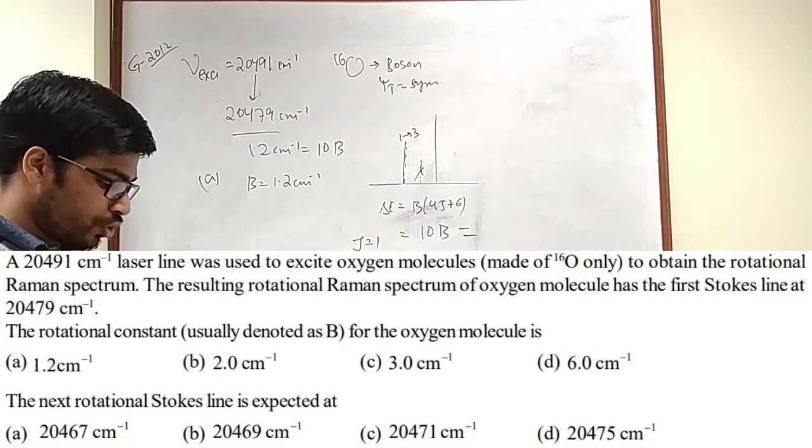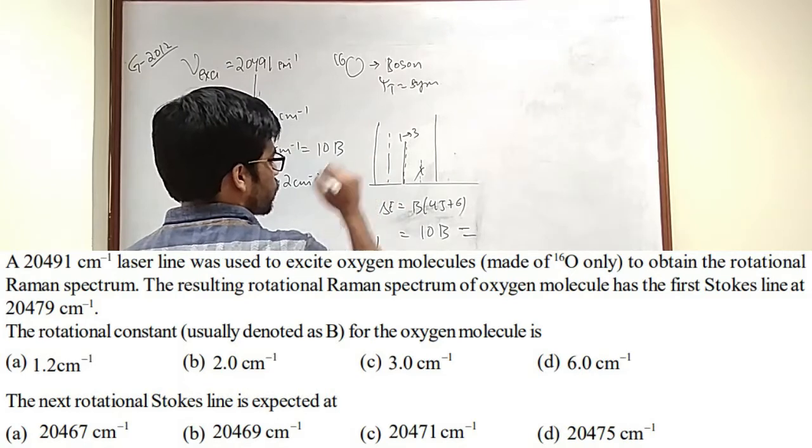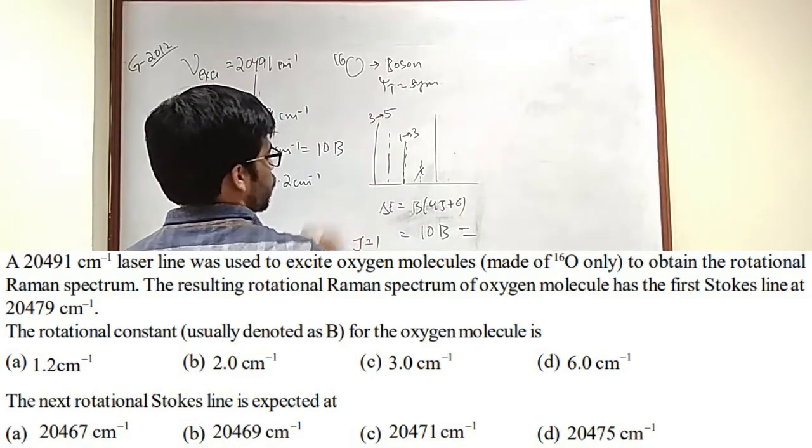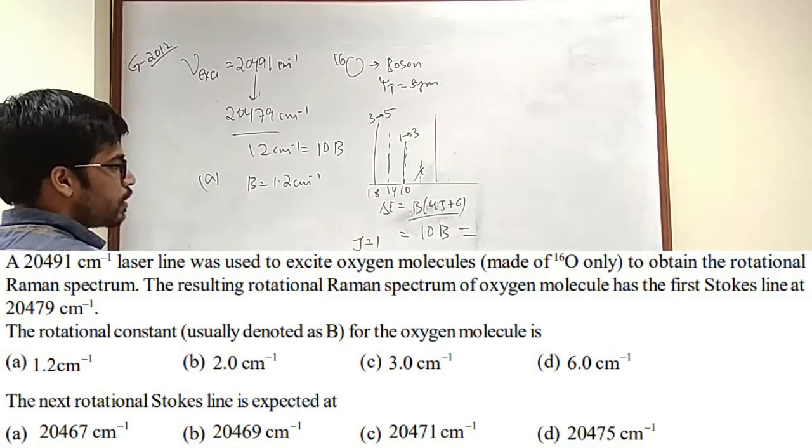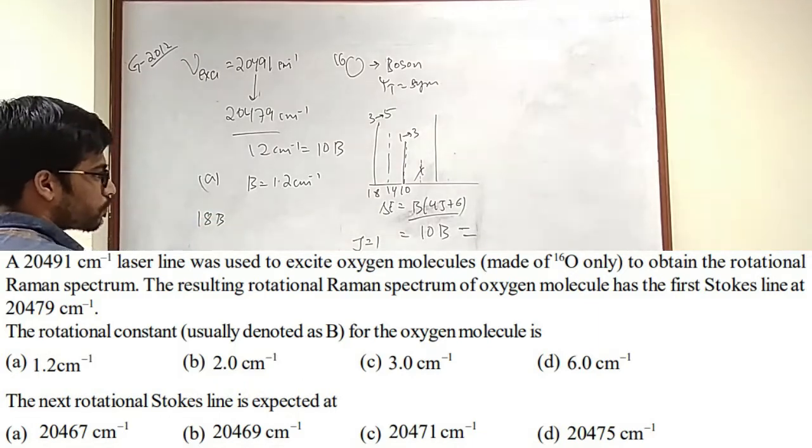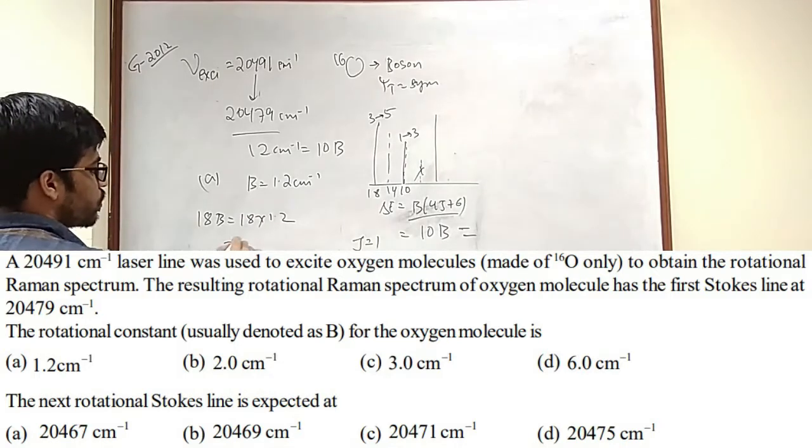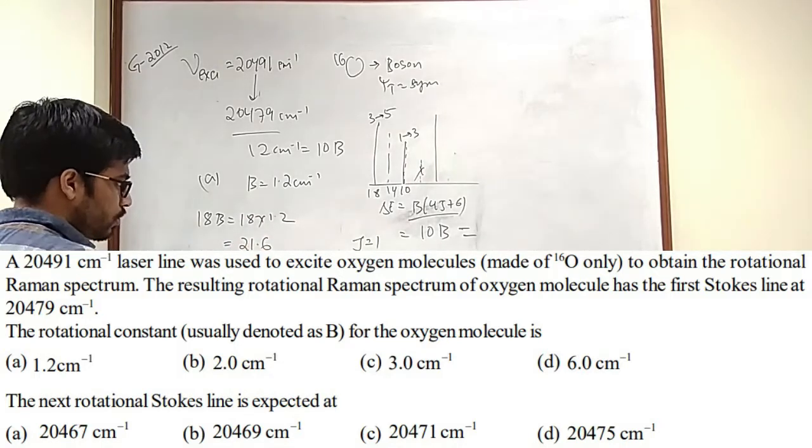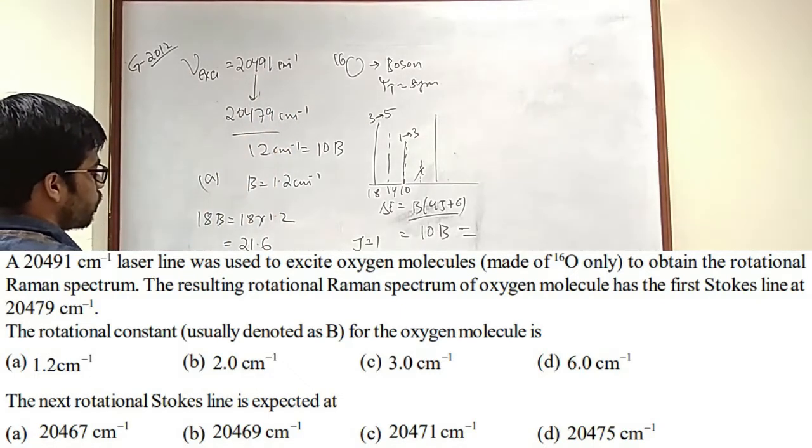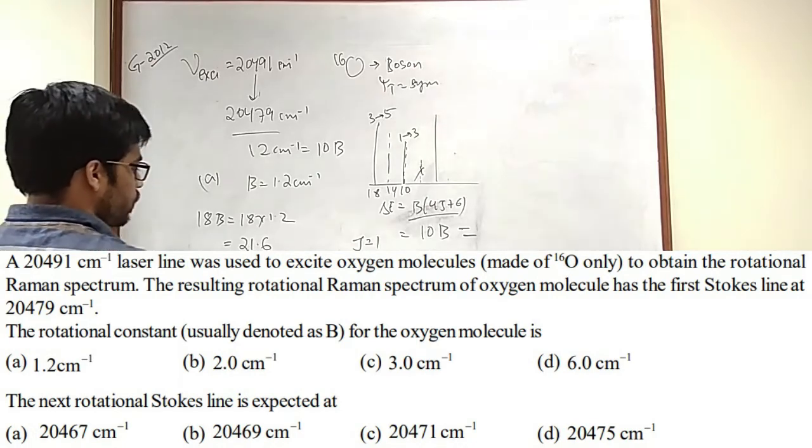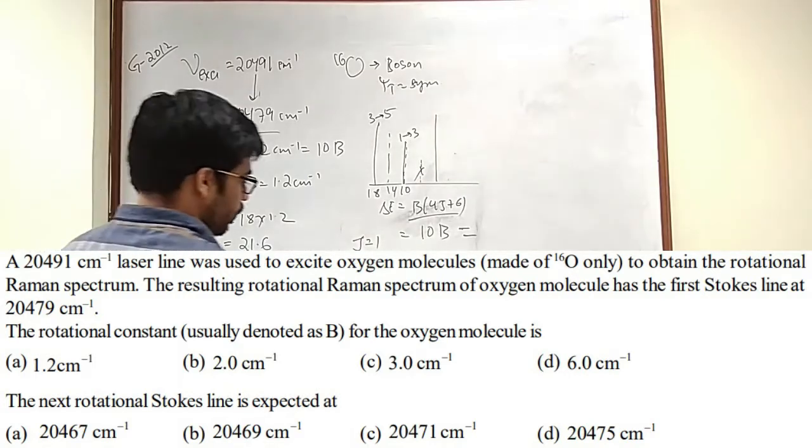Another question is that the next rotational Stokes line is expected at. So you know the next line is going to be missing, and there is going to be this line for 3 to 2, 5. This was 10, 14, 18. You can find using this. So that means 18B, you will have a line. So let's say this is 18 into 1.2, this will be 21.6. And it will be 20491 minus 21.6. This is going to be somewhere 20469, which is given in option number B.